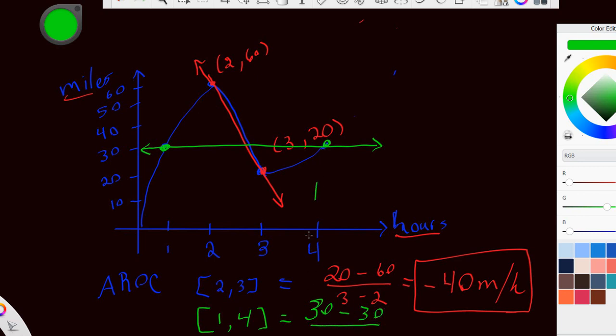Good. Divided by our x's. So it would be 4 minus 1, which would give us zero divided by three, which would give us an average rate of zero miles per hour.